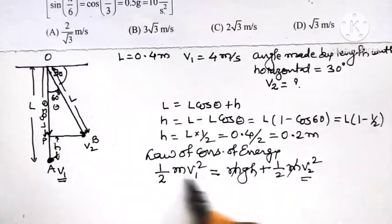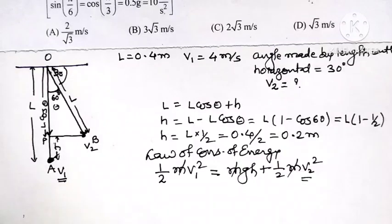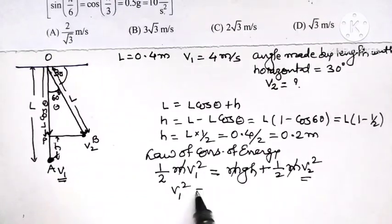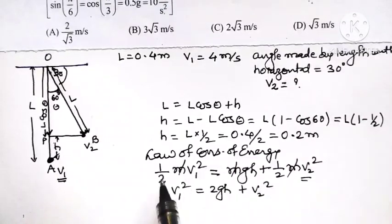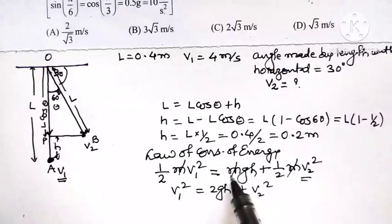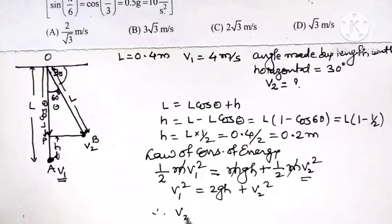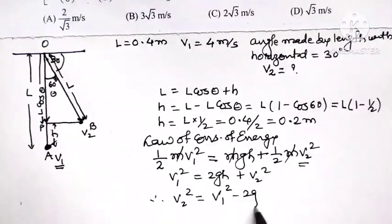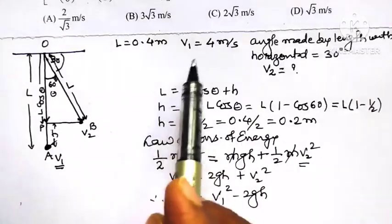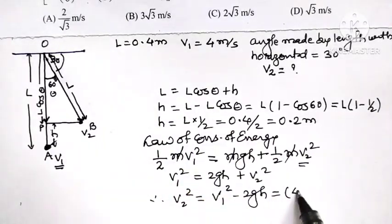M on both sides get cancelled. Half V1 square, half multiply by 2, so we will get V1 square equals 2GH plus V2 square. Here 2 gets cancelled on one side and 2 is multiplied on the other. Therefore, V2 square equals V1 square minus 2GH.